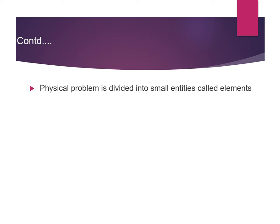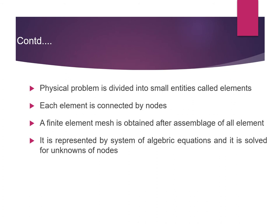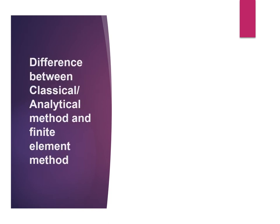The physical problem is divided into small entities called elements. Each element is connected by nodes, and a finite element mesh is obtained after assemblage of all elements. It is represented by a system of algebraic equations and solved for unknowns at nodes. Today I am going to explain some basic concepts — a total overview of the fundamental concepts of finite element analysis, starting with the difference between the classical or analytical method and the finite element method.